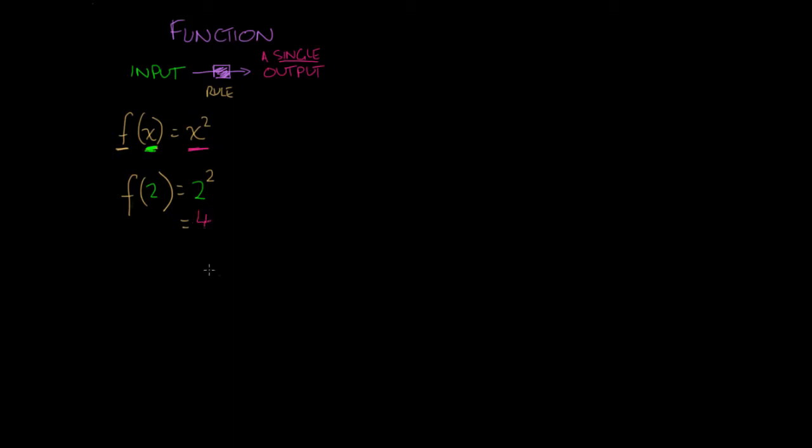2 squared equals 4. So what we've done here is we've taken an input, here the input was 2, we've put it into our little machine, our rule, and this machine has just output one single value, and that single value is the value of 4.